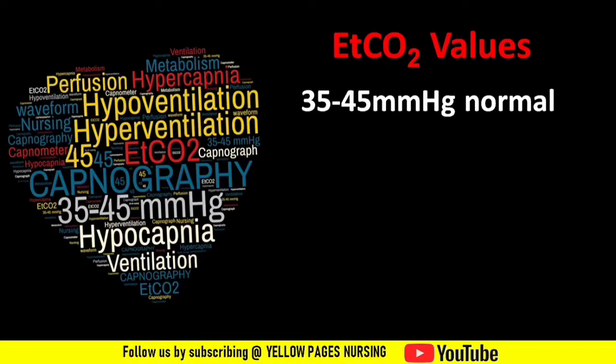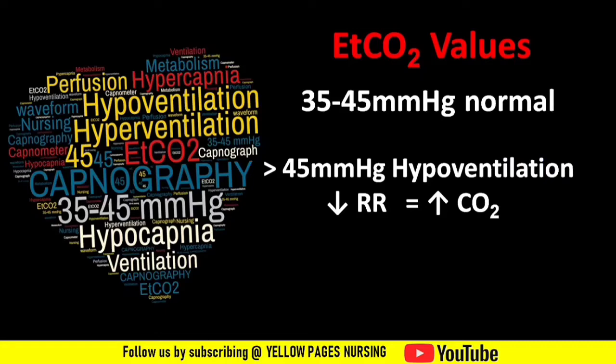EtCO2 values: 35 to 45 mmHg is the normal range of EtCO2. When it goes beyond 45 mmHg, we call it hypoventilation. In hypoventilation, respiratory rate decreases, which in turn decreases gas exchange, and thereby EtCO2 increases.